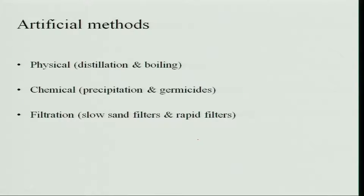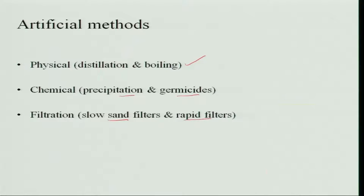Artificial methods of purification include physical methods followed at home, such as boiling and distillation, and chemical methods by precipitation, using germicides, and filtration. For large-scale purification, we have slow sand filters and rapid sand filters. Large-scale methods are: filtration, ozonization (where oxidation occurs), and chlorination.